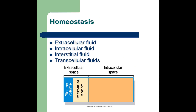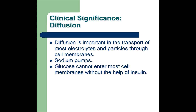We want to regulate fluid to maintain homeostasis — a living thing has to have equilibrium to survive. Having our fluid in the right spaces is very important. Water exists extracellular, intracellular, interstitial, and transcellular. Diffusion and the transport of electrolytes through the cell membrane are very important. Electrolytes go in and out between cells via sodium pumps, and glucose cannot enter most cell membranes without the help of insulin.